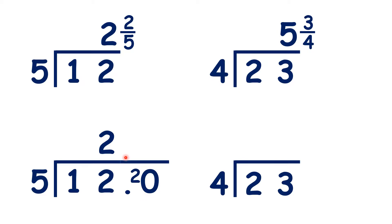We also need to remember to copy up the decimal point into our answer. So now we can just do 20 divided by 5, which is 4.